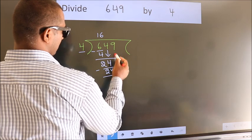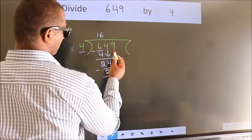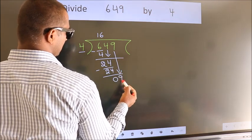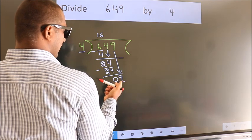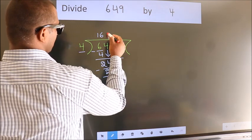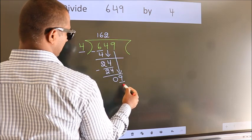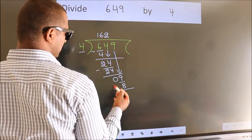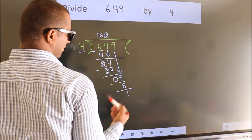After this, bring down the beside number. So 9 down, making 9. A number close to 9 in the 4 table is 4 times 2, which is 8. Now we subtract. We get 1.